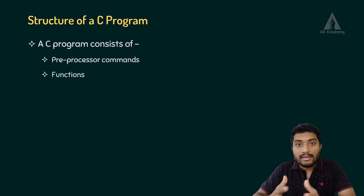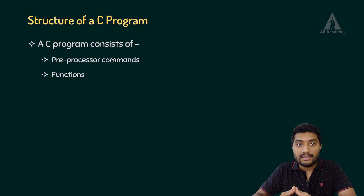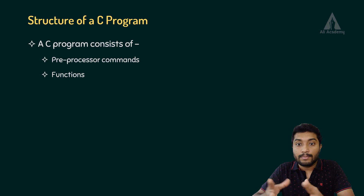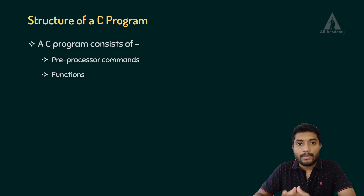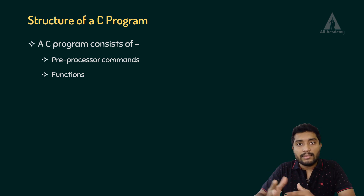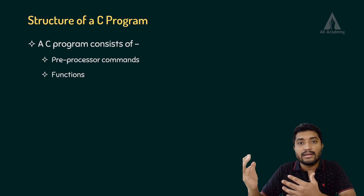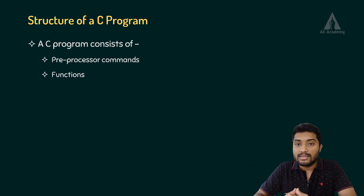Now, a C program might consist of functions. We have to add additional, subtraction, multiplication, area, volume — all as separate functions. So, we have separate functions. One C program is structured as a procedure-oriented program. So that is what we call different functions. It may consist of functions.